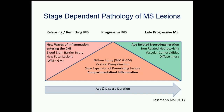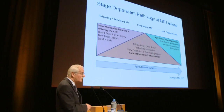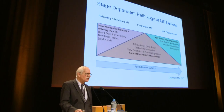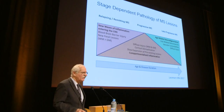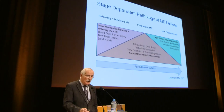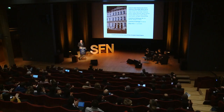Three mechanisms act in parallel in MS: new waves of inflammation entering the brain, corresponding to clinical and MRI activity as defined by Fred Lublin; compartmentalized or diffuse inflammation not appearing as MRI activity but associated with slow lesion expansion, cortical demyelination, and diffuse injury; and downstream neurodegeneration induced by the inflammatory process but amplified by additional comorbidities, age-related changes, and iron-related factors.